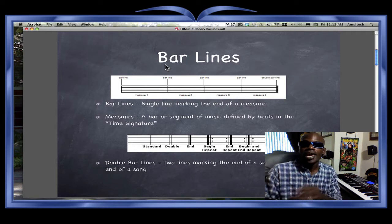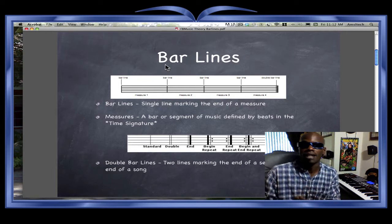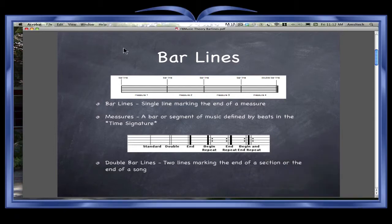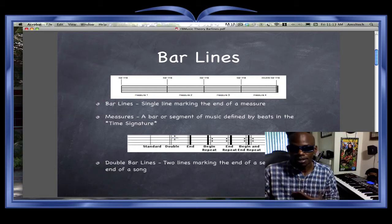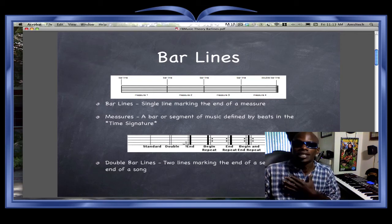For now, we're going to stick with bar lines and move on to double bar lines. If you see right here, we have a measure, and then we have a bar line — that's a single bar line. Measure 2, we have another single bar line. Measure 3, we have another single bar line. And at the end, measure 4, we have a double bar line.